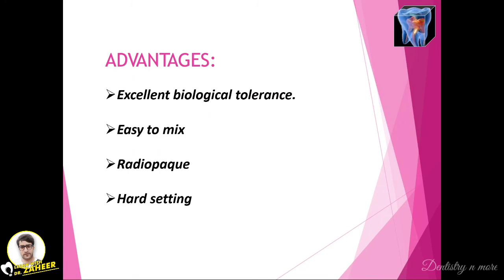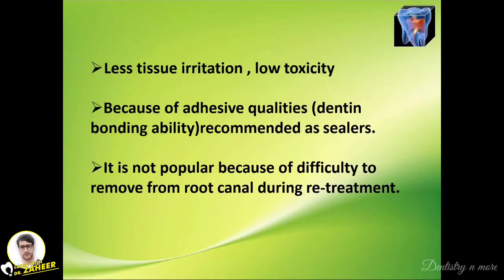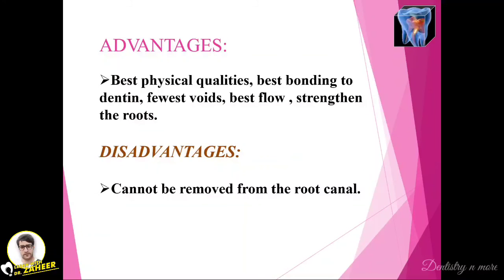The glass ionomer sealer has less tissue irritation and very low toxicity. Due to its adhesive quality, it has a dentine bonding ability through chemical bonding, which is why it is recommended as a sealer. However, it is not popular because of the difficulty in removing it from the root canal during retreatment — the chemical bonding with tissues makes it very difficult to remove the gutta-percha. Advantages include the best physical quality, best bonding to dentine, fewer voids, best flow, and it strengthens the roots. The main problem is that, due to chemical bonding, it cannot be removed from the root canal.